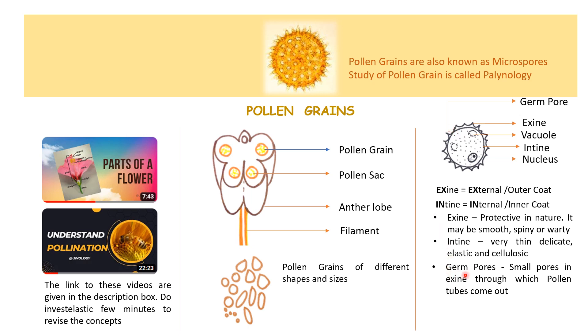Now before germination, a pollen grain contains only one nucleus — a single nucleus — which is surrounded by the cytoplasm.